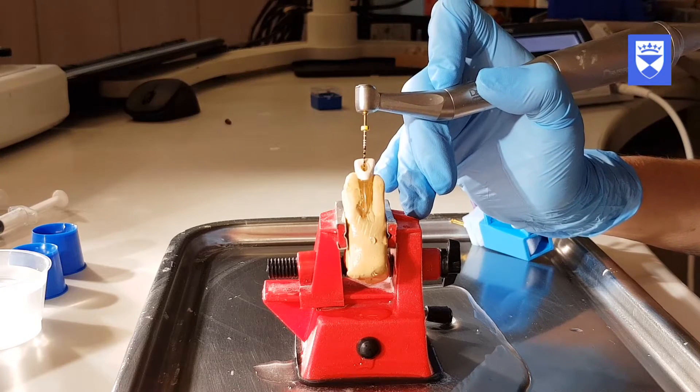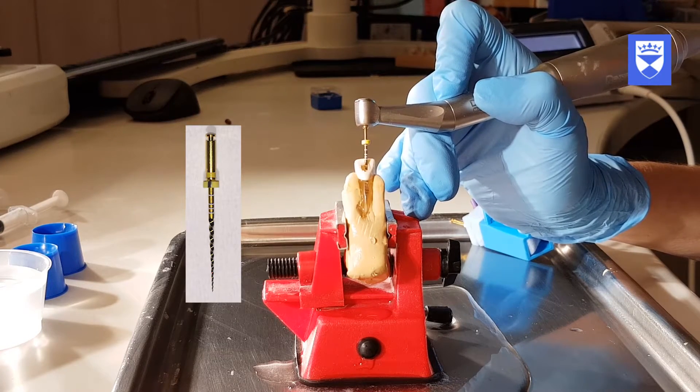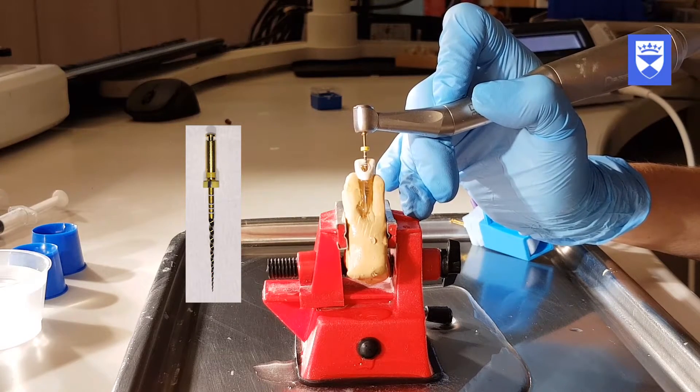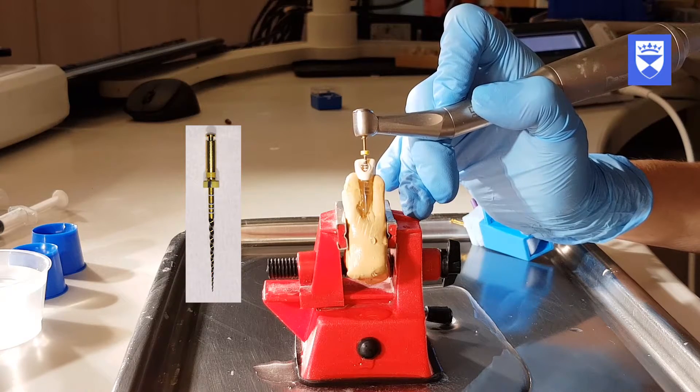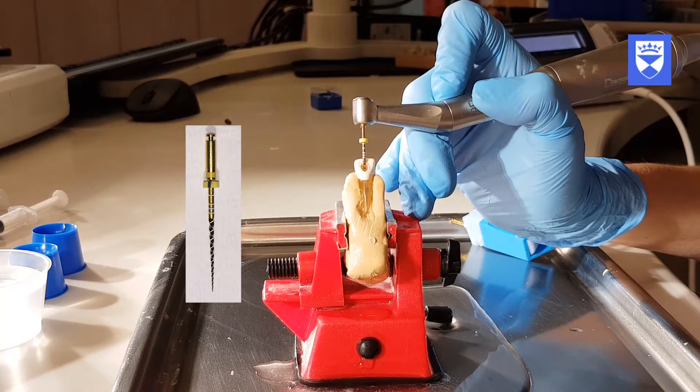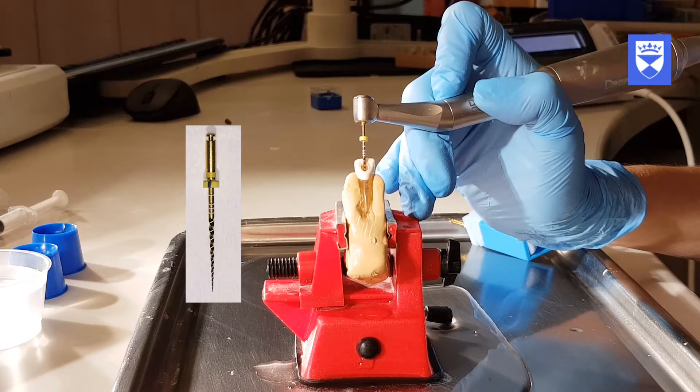Starting with the smallest file, F1, the file is used briefly in the canal with no brushing movements. The canal is irrigated, recapitulated with a size 10 flexofile and irrigated again.